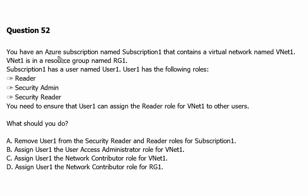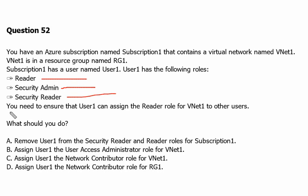You have an Azure subscription named Subscription 1 that contains a virtual network named vNet1. vNet1 is in a resource group named Resource Group 1. Subscription 1 has a user named User 1. User 1 has the following roles: Reader role, Security Admin role, and Security Reader role. You need to ensure that User 1 can assign the Reader role for vNet1 to other users. What should you do?